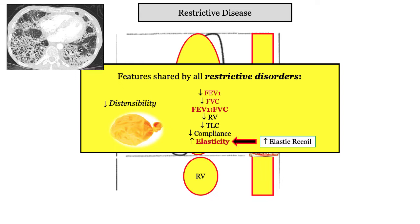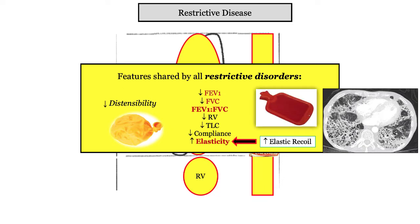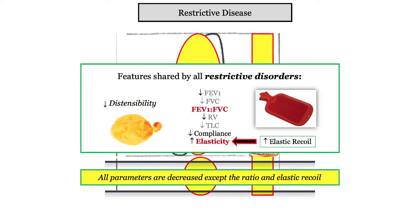On the flip side, elasticity or elastic recoil is described as increased — the lung wants to snap back or recoil to its resting, underinflated state. The increased elasticity is conceptually depicted by the rubber water bottle: it has poor distensibility, resisting inflation, and wanting to recoil to its uninflated state, like the fibrotic lung.